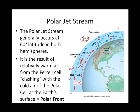Nestled in the Ferrell cell is the polar jet stream — a ribbon of fast-moving air seen here in cross-section. Remember how the intertropical convergence zone wanders north in July and south in January — so everything wanders, including the jet streams.